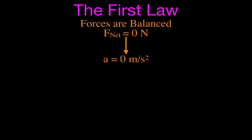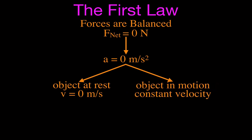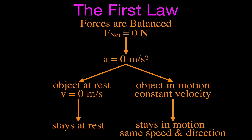If your velocity is constant, there are two ways to have zero acceleration. One is if you're at rest — an object at rest has a velocity of zero, you're just standing still, not moving. Or you can be an object in motion but moving with a constant velocity, where your speed and direction are not changing. In both cases, if your forces are balanced, you're going to continue doing the same thing. That is Newton's first law — the law of balanced forces, the law of inertia.